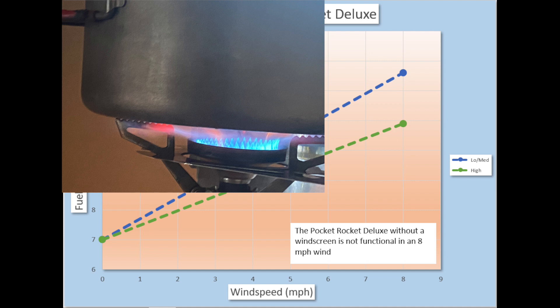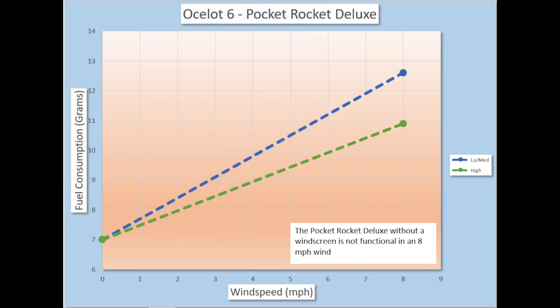With the Ocelot 6 windscreen in place, you can see that the flame stayed pretty coupled to the pot. And I ran it at high, medium and low. An interesting thing to note is at high burn rates, and this is like getting a boil in a little over two minutes, it actually performs better, has higher efficiency. And I believe that's because it builds up the internal pressure to keep the flames coupled to the pot.